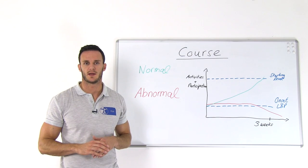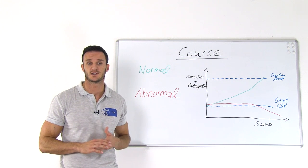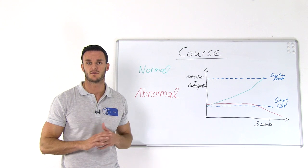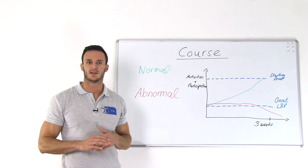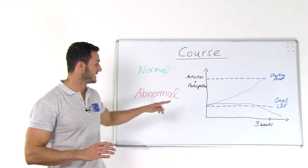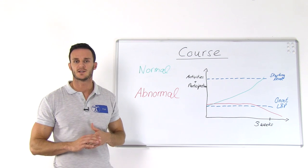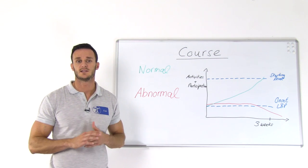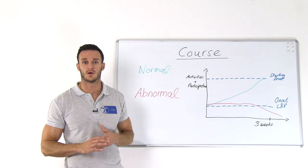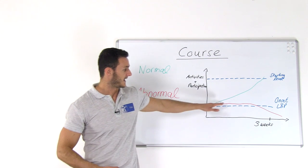What is a normal or abnormal course of back pain? In a normal course, a patient can gradually increase his activity and participation level over time, back to the level where he or she was before the onset of the low back pain episode. It does not have to resolve completely, but the patient is not limited in daily life anymore, like you can see on the green line. The course is considered abnormal if the patient's limitations in activities and participation do not decrease over time, but remain unchanged or become worse until three weeks after the onset of the low back pain episode, like you can see on the red line here.